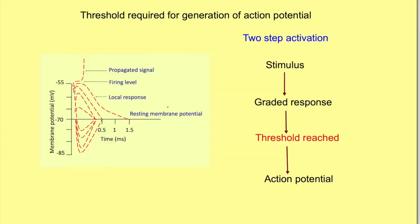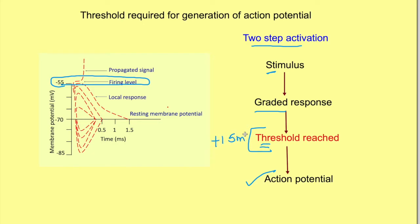Action potential generation is basically a two-step process: a stimulus first leads to a graded change in potential, and if this graded change reaches the threshold — the firing level — then the action potential is generated; otherwise the change in potential dies down. Generally, threshold is plus 15 millivolts from RMP. So if RMP is minus 70 millivolts, the threshold will be at minus 55 millivolts; if RMP is minus 90 millivolts, the threshold will be around minus 75 millivolts.